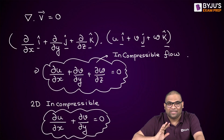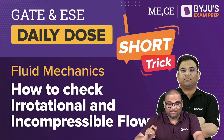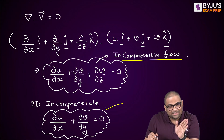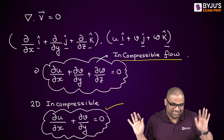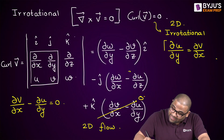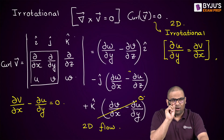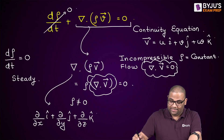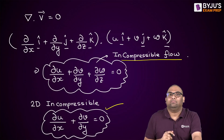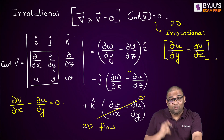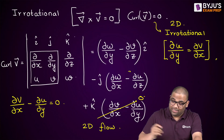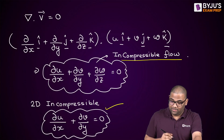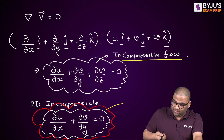So the conclusion: to check 2D incompressible flow, verify that ∂u/∂x + ∂v/∂y = 0. To check irrotational flow, verify that ∂u/∂y = ∂v/∂x. Note carefully: for irrotational it is ∂u/∂y (not ∂u/∂x). If you remember just these two conditions, your job is done.